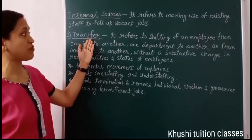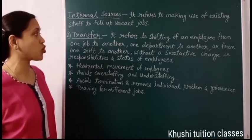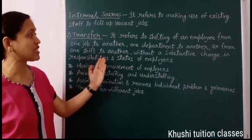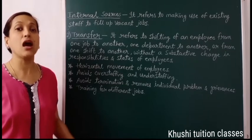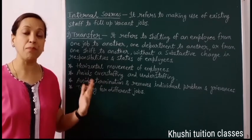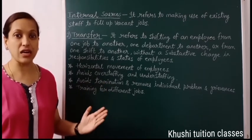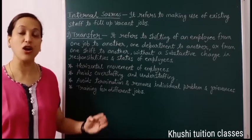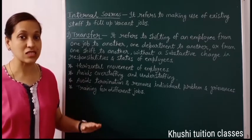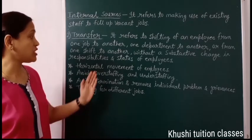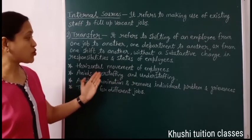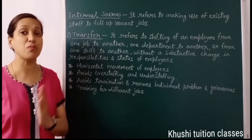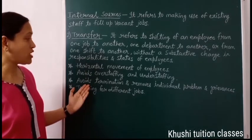The second internal source is transfer. It refers to shifting of an employee from one job to another, one department to another, or from one shift to another without a substantive change in responsibilities and status. In transfer, a present employee is moved to a new department, new branch, or from morning shift to evening shift. But this transfer happens at the same level and same position, so the employee's designation does not change — authority, responsibility, and payment remain the same. So this is horizontal movement of the employee. It avoids overstaffing and understaffing. If one branch has overstaffing, we can shift employees to a branch with understaffing. It also avoids termination — instead of terminating an employee's services, we can transfer them.